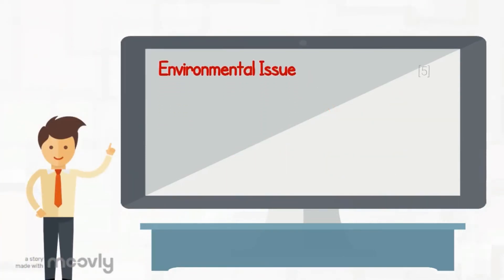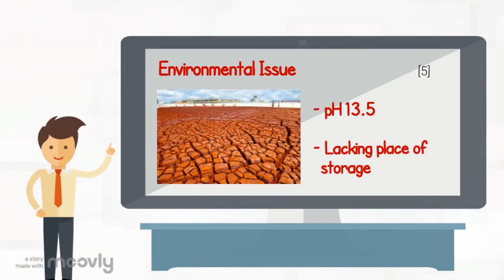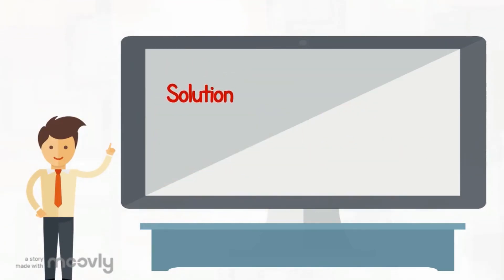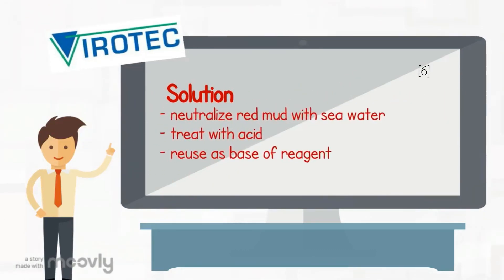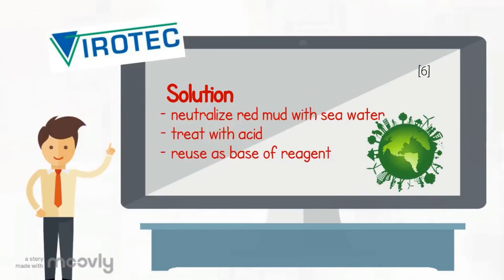However, bioprocess will produce high pH red mud which is unfit to discharge to the marine environment and eventually gives rise to a storage problem. But one Australian company, ViroTech, has discovered a solution: to neutralize the red mud with sea water and treat it again with acid to reduce the pH level of red mud. This will make red mud a reusable base for commercial reagent.